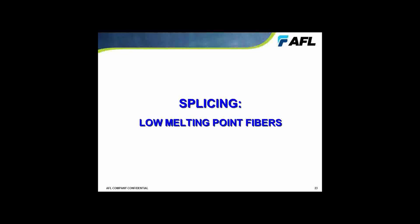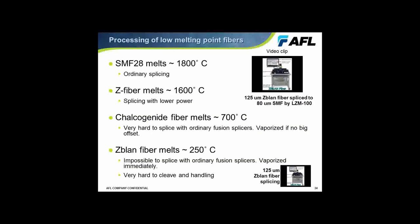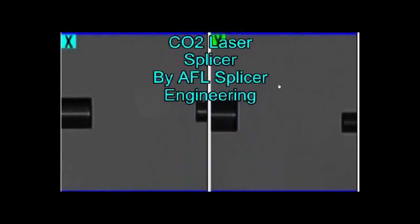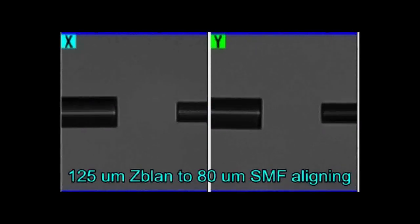Another significant challenge is represented by low melting point fibers. A normal silica fiber melts at about 1800 degrees C. If it's something like a Z fiber heavily doped with fluorine, that melting point becomes lower. But if we have another type of glass such as a chalcogenide or a ZBLAN, the melting temperature can be far, far lower. We have been successful using the CO2 laser to address this, and I'll show an example of splicing a ZBLAN to an SMF using the laser energy. The ZBLAN fiber is on the left-hand side and the conventional single-mode silica fiber is on the right.